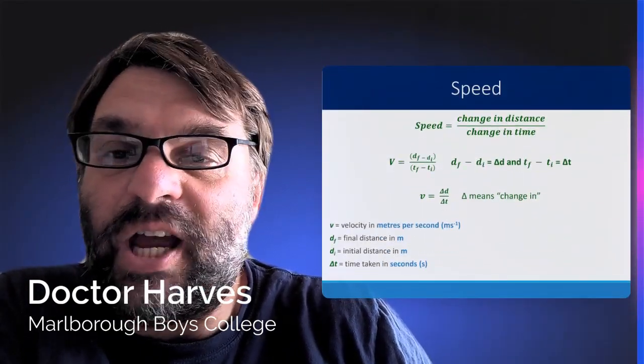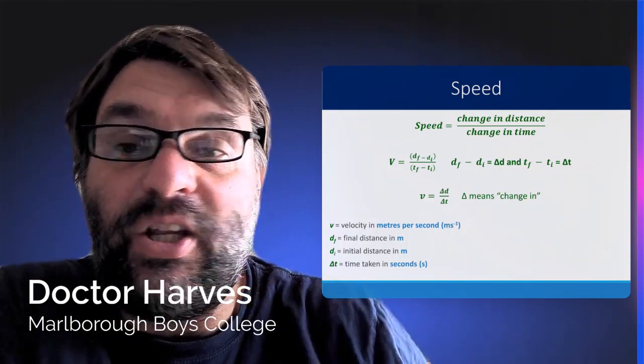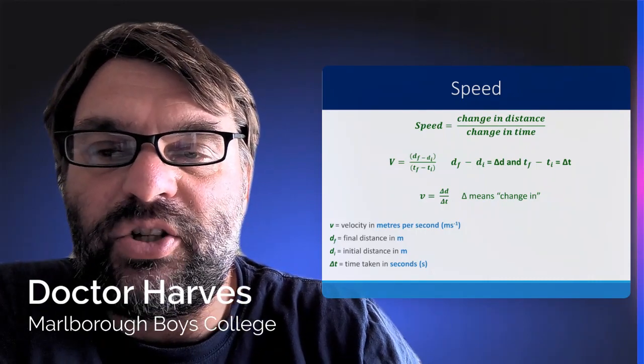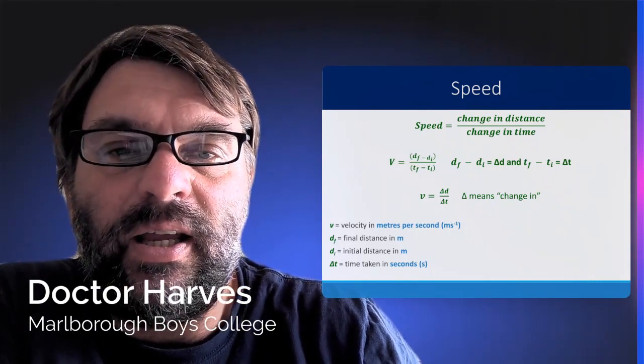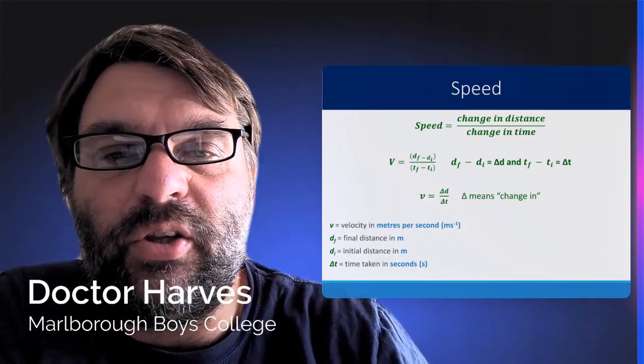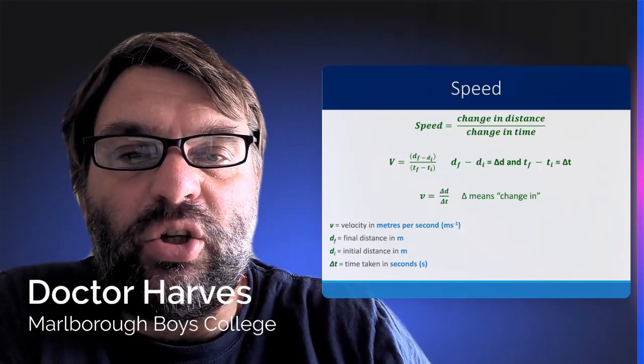So as I've said, speed is the change in distance of an object over change in time, where the change in distance is the final distance minus the initial distance, the starting distance, and the change in time is the final time for that final distance minus the initial time.